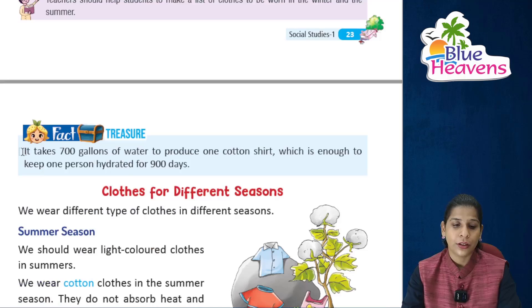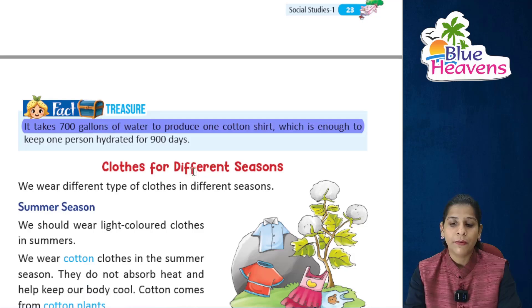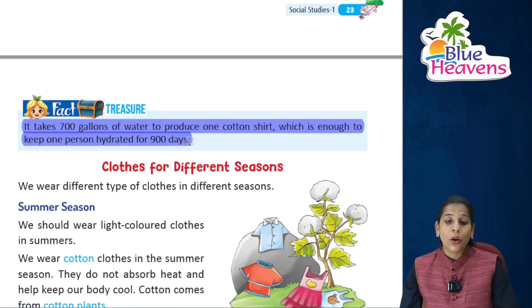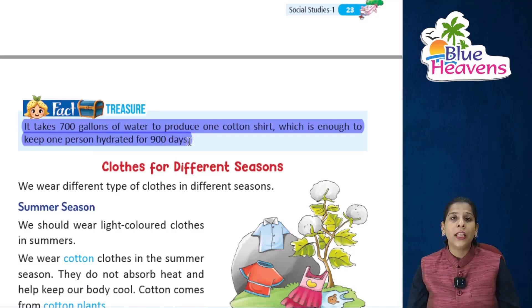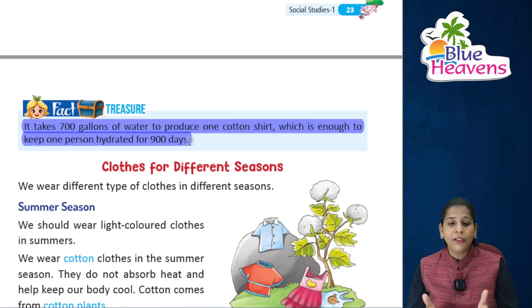Fact Treasure: It takes 700 gallons of water to produce one cotton shirt, which is enough to keep one person hydrated for 900 days. So producing just one cotton shirt requires a very large amount of water.